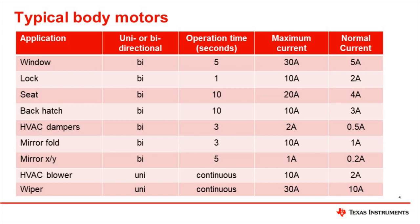This partial list of typical body motor applications shows the wide variation in requirements. Most applications require the motor to drive in two directions, but a few, such as cabin blower fans or windshield wipers, only need motor rotation in one direction. The operation time, which affects thermal calculations, can range from very short duration such as door locks to continuous operation for hours. The normal and maximum current levels can also vary widely, and that can have a strong influence on the selection of motor driver IC.